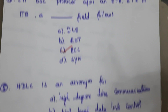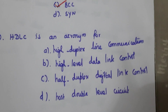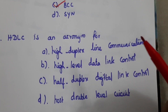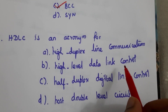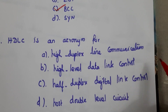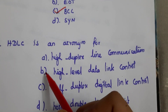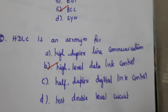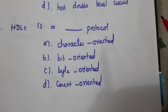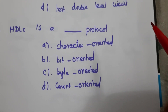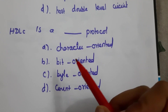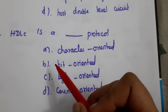Next question: HDLC is an acronym for what? HDLC stands for High-Level Data Link Control protocol, so the answer is B. Next question: HDLC is a what type of protocol? HDLC is a bit-oriented protocol, whereas BSC is a character-oriented protocol. The answer is B.